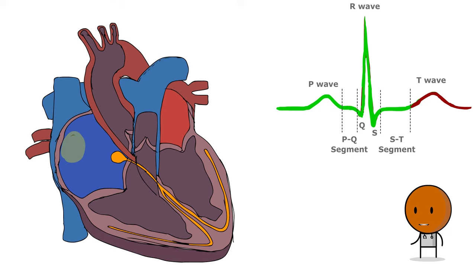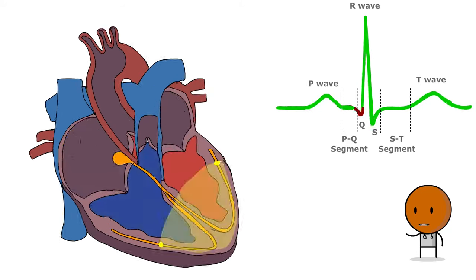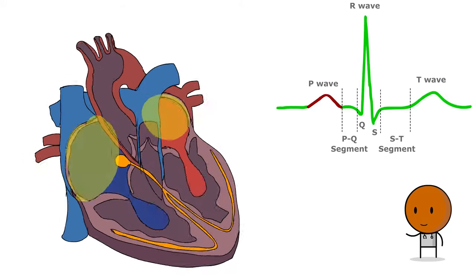This sequence of electrical events is repeated with each cycle of the heart. So that pretty much sums up the cardiac conduction system and EKG.